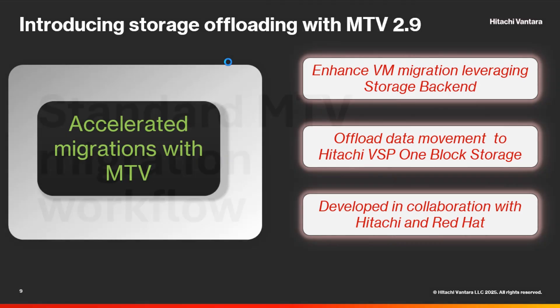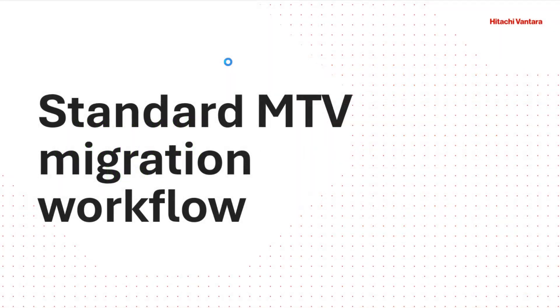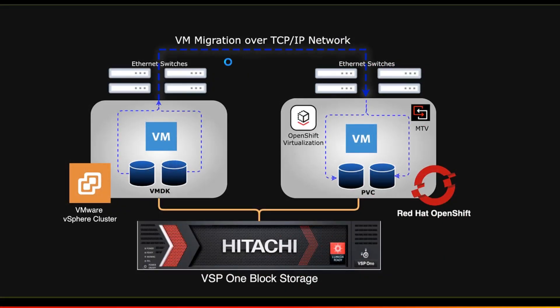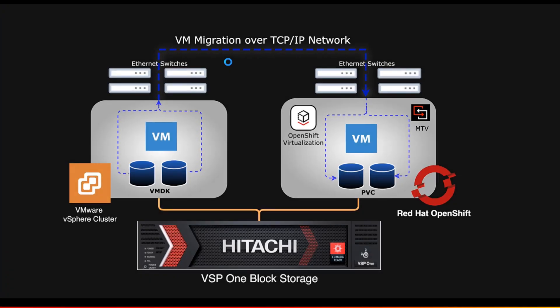Let's quickly review the standard MTV migration workflow. In a standard MTV migration workflow, you set up a migration plan, you identify your source VMs from your VMware vSphere cluster or alternative hypervisor, you specify your target OpenShift virtualization cluster, and then you identify the network mappings and storage mappings. Once the migration plan kicks off, that data transport happens over the TCP/IP network, which is good, but it does introduce some delays and taxes the CPUs and memory of the hosts on both sides.